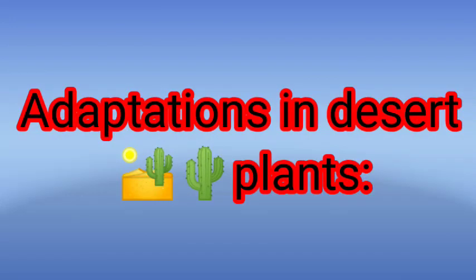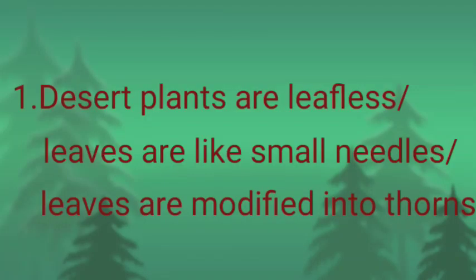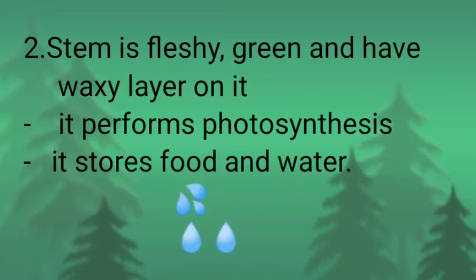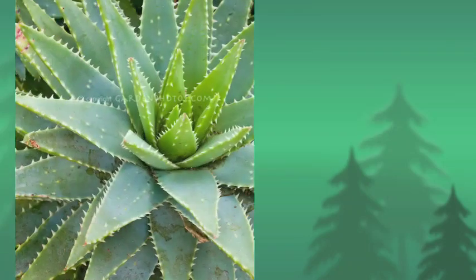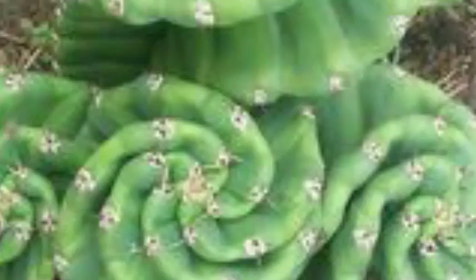Next we will learn adaptations in desert plants. To avoid water loss from evaporation, desert plants are either leafless, or their leaves are converted into needle-like structures or thorns. The stem of a desert plant is green and fleshy and has a waxy layer on it. It also performs the function of photosynthesis and stores food and water.